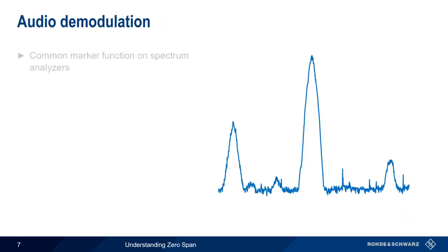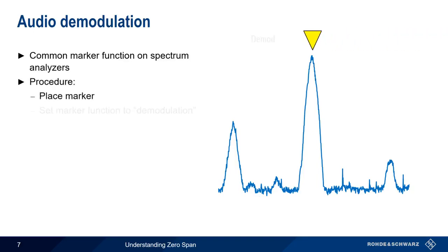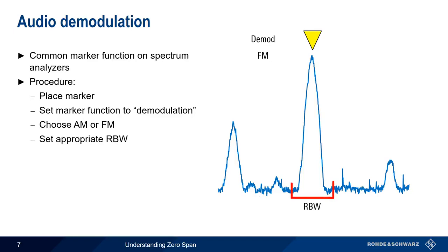A common marker function in spectrum analyzers is AM and FM audio demodulation, whereby we can listen to analog modulated signals. The procedure is fairly universal: we place a marker on the signal of interest, change the marker function to demodulation, choose AM or FM, and select an appropriate resolution bandwidth. The resolution bandwidth should be wider than the signal and any sidebands to avoid distorted audio. For broadcast FM radio this is usually 300 kHz, and for narrowband FM transmitters we normally use a 30 kHz resolution bandwidth.